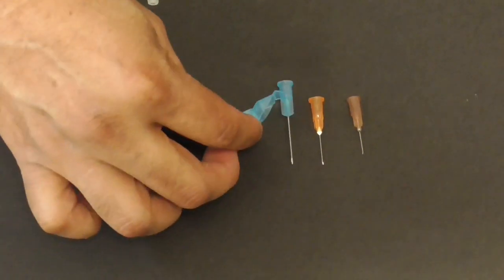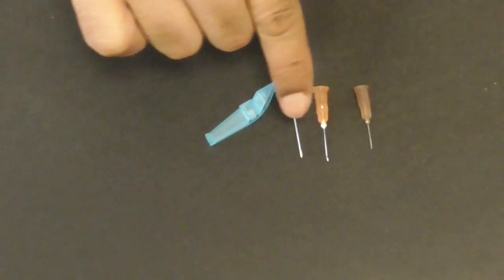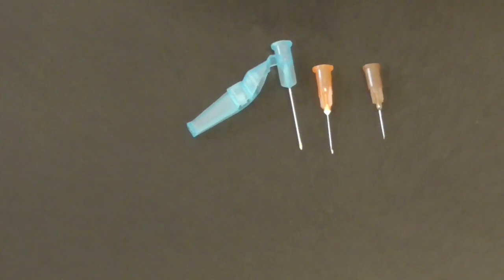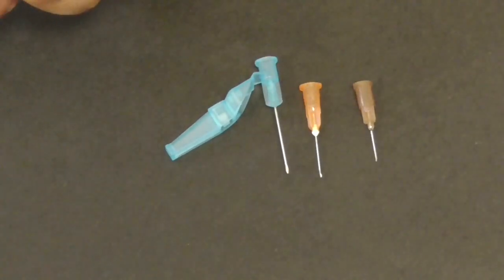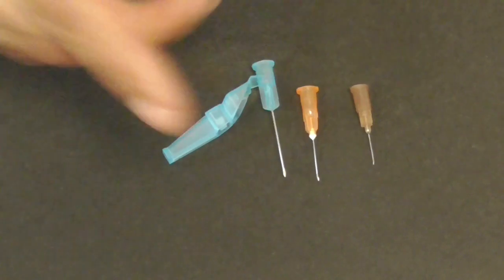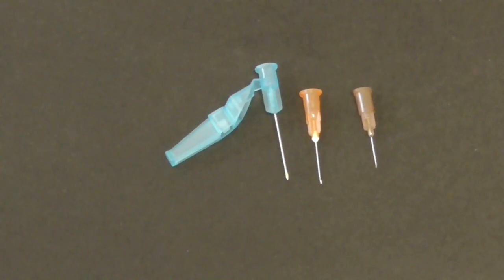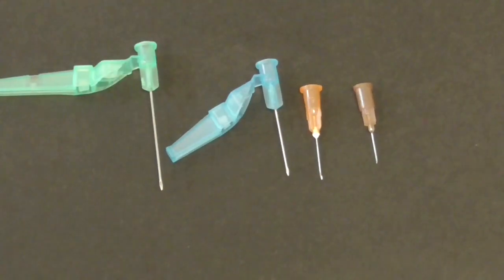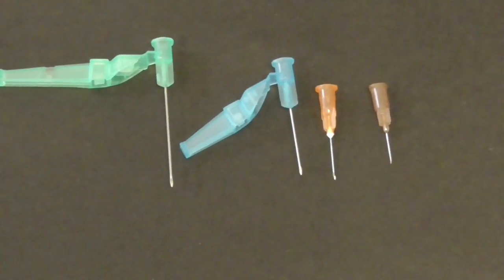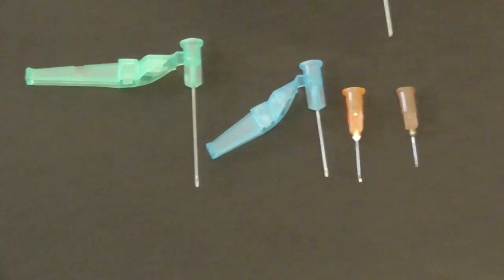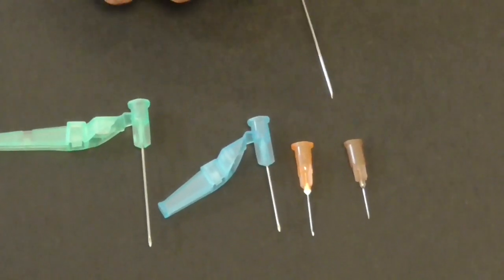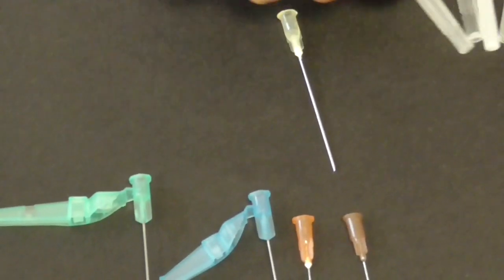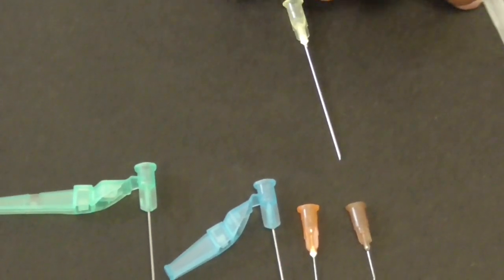This one's a 23 and this is as you can see slightly bigger. I know they look like different lengths but the length is not determined by the gauge it's actually the size of the needle, how much fluid can go through it in one push and then you have this one which is a 21 gauge and this big beast of a needle that's a 19 gauge needle so you can see that they're getting fatter as they go along.